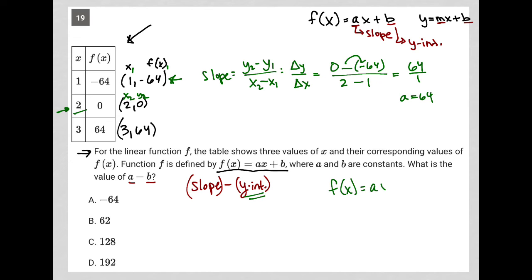f of x equals ax plus b, and I'm going to replace it with an ordered pair. So this is negative 64 for that first ordered pair, equals a, which I now know is 64, times x, which is 1, and then plus b. So negative 64 equals 64 plus b. And of course, I'd subtract 64 from both sides to isolate b, and I'd have negative 128 equals b. So there's my y-intercept. So b is negative 128.